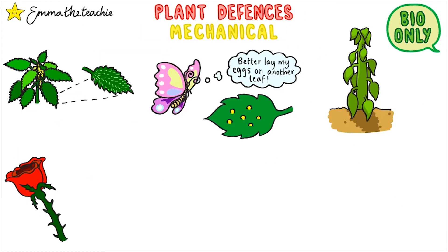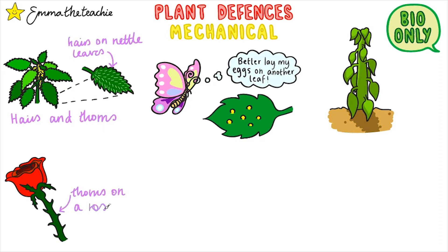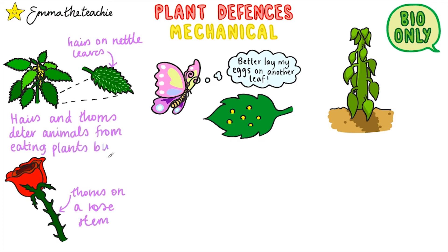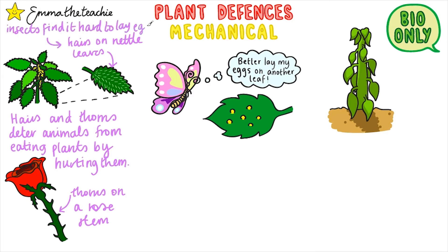Now we'll look at mechanical defenses. Hairs like the ones you see on nettle leaves, and thorns like the ones you see on rose plant stems, deter animals from eating the plant by hurting them. Additionally, insects find it harder to lay eggs on plants if they've got hairs on the leaves.